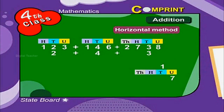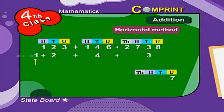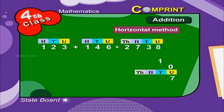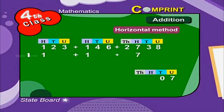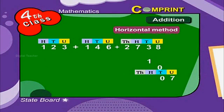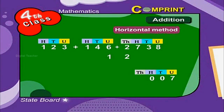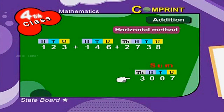Add all the digits of the tens place along with the carried digit. That is 1 plus 2 plus 4 plus 3 is equal to 10. Let us carry the digit 1 to the hundreds place. Now add the digits of the hundreds place, then the thousands place. 1 plus 2 is equal to 3. Therefore, the sum is 3007.